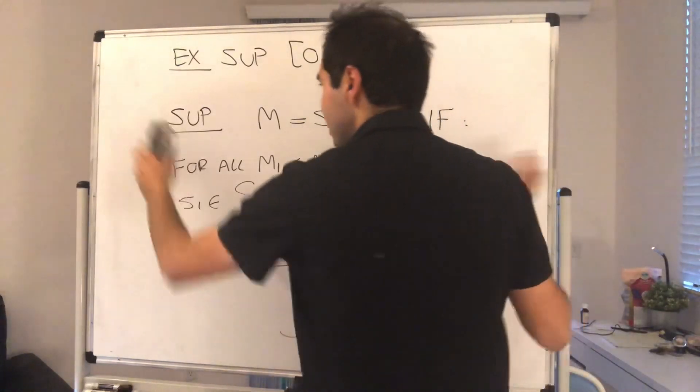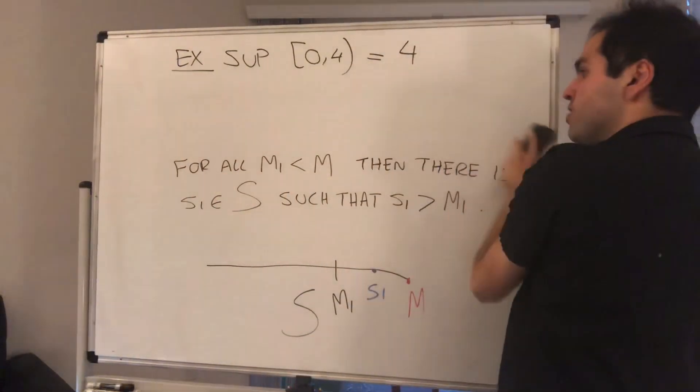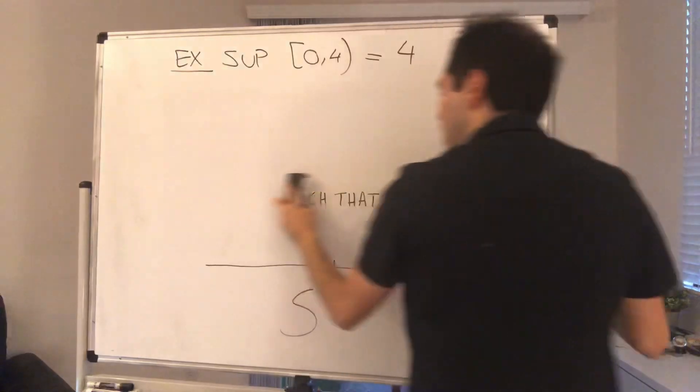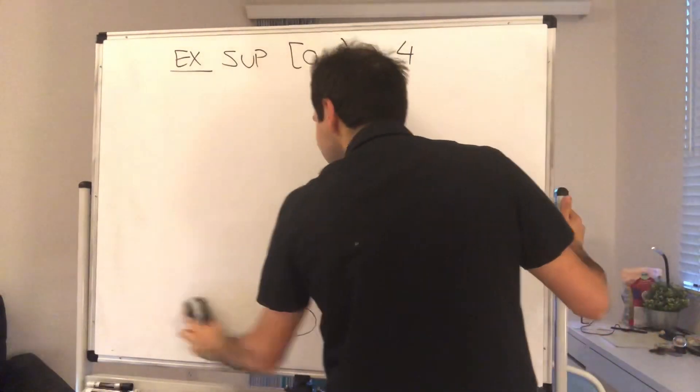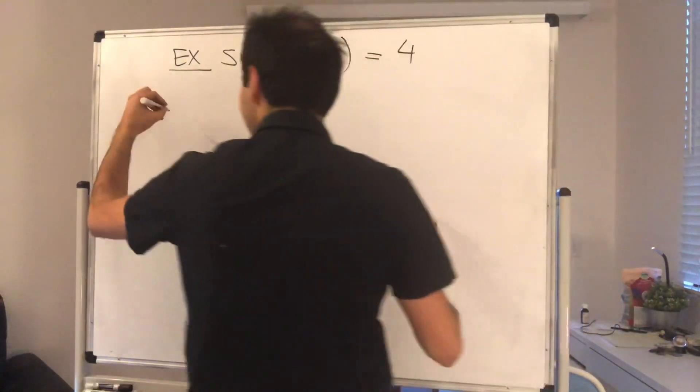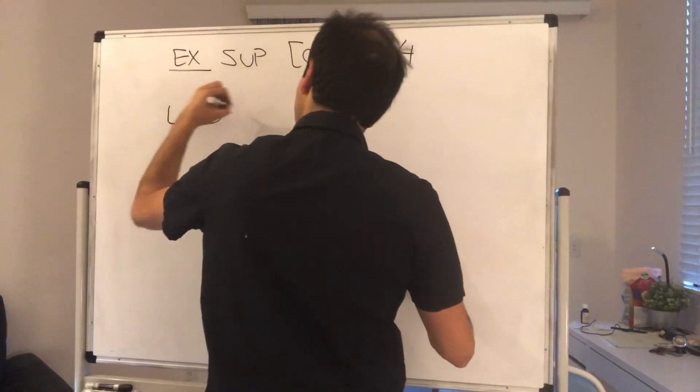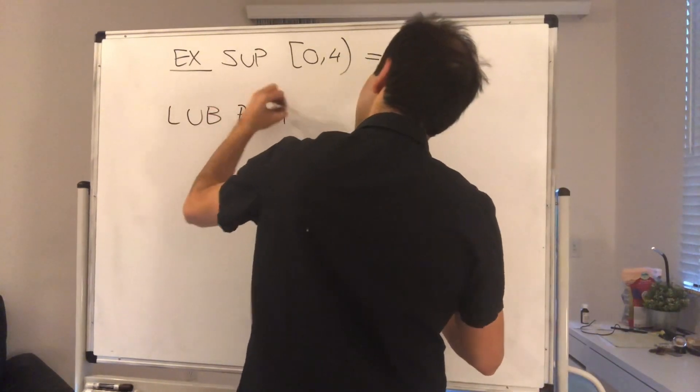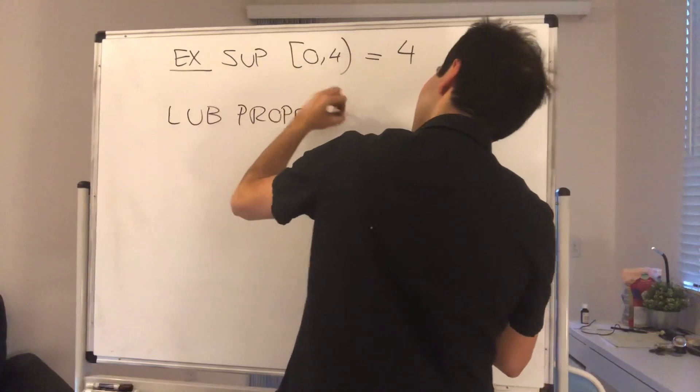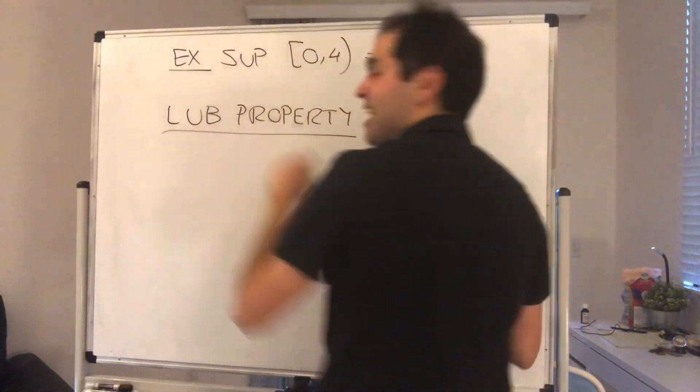And this is what the book calls the completeness axiom and what I like to call the least upper bound property. So very important, the L-U-B property, because I love you.